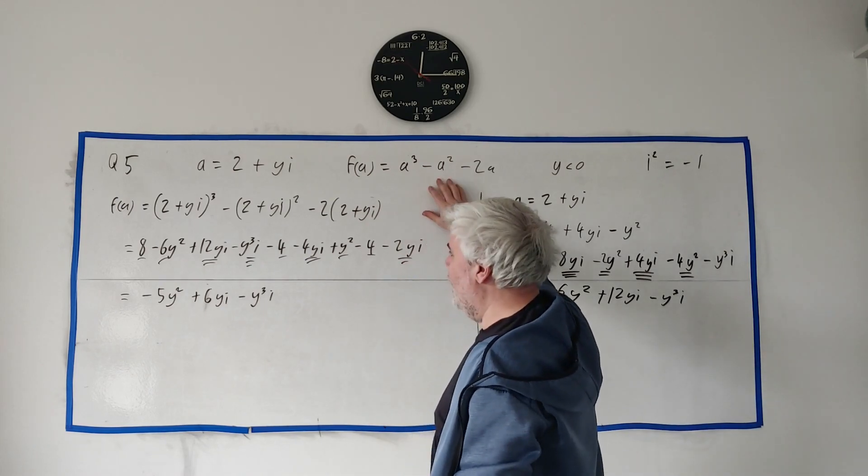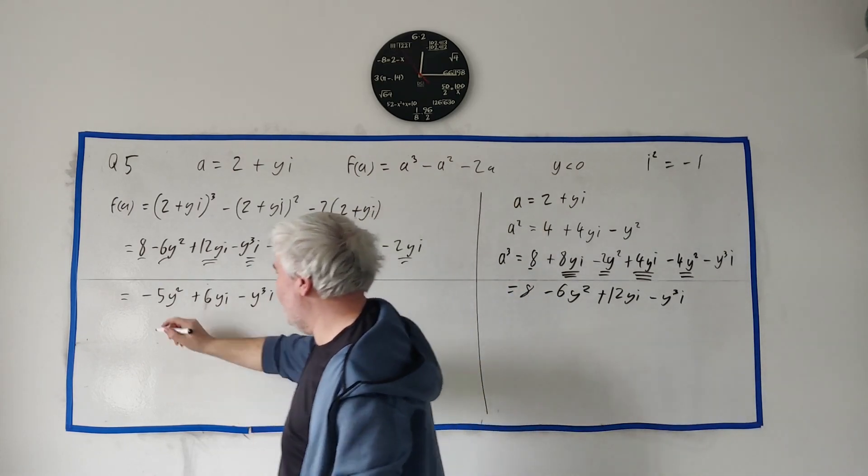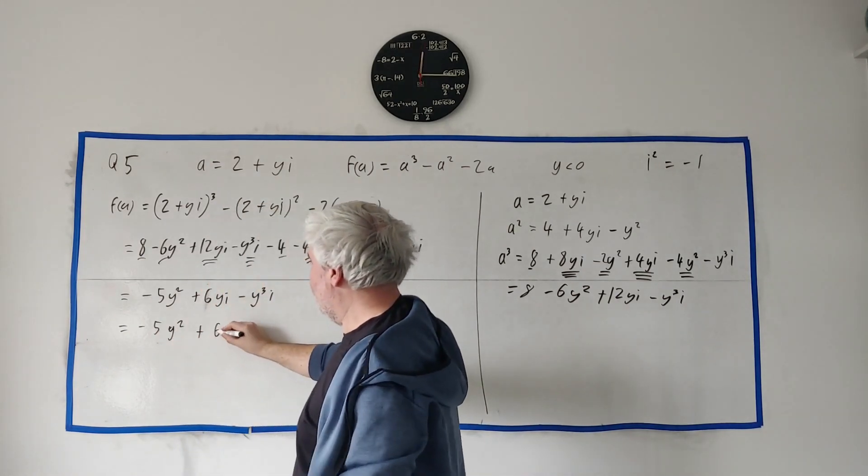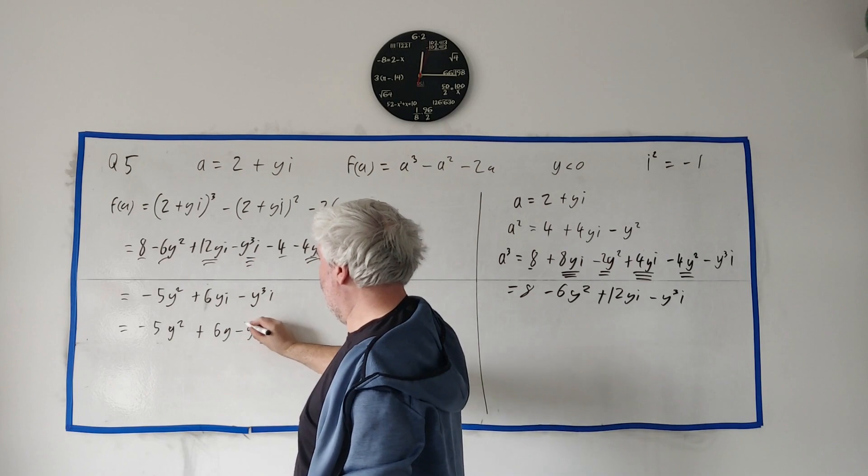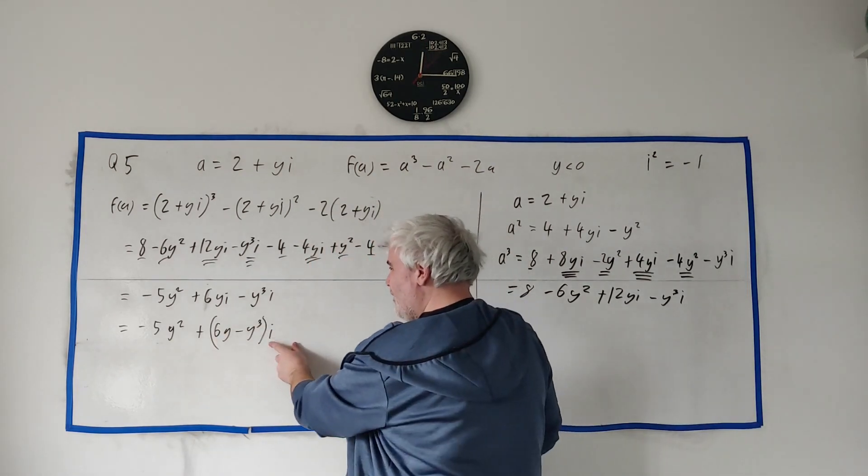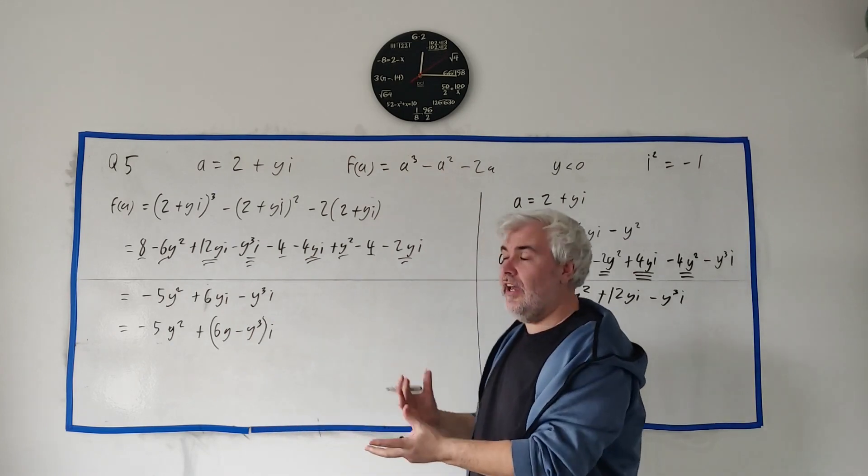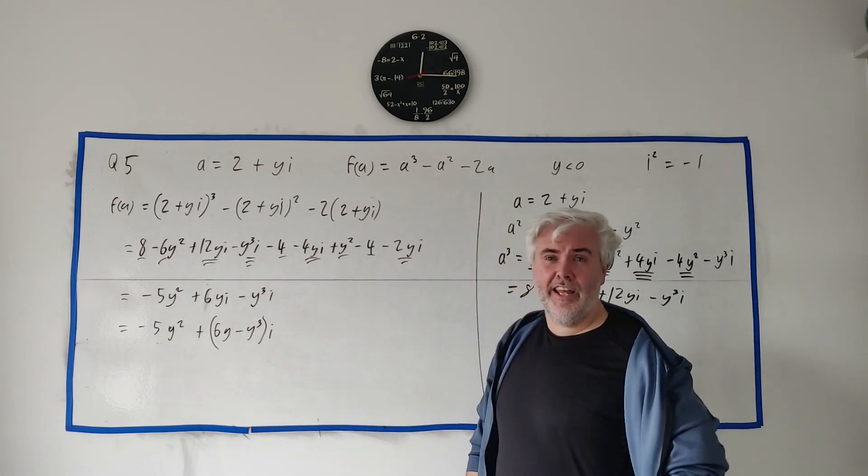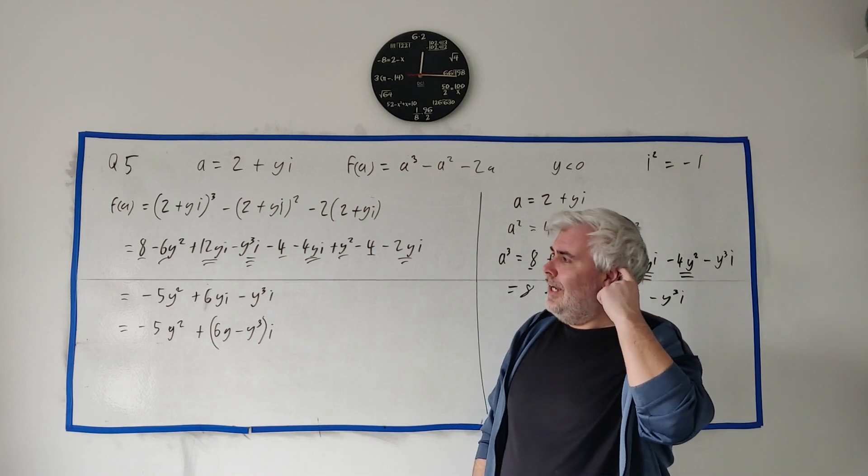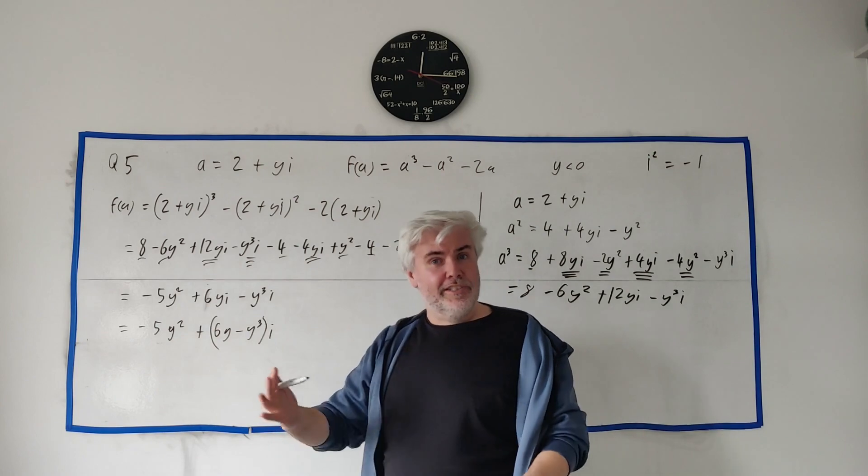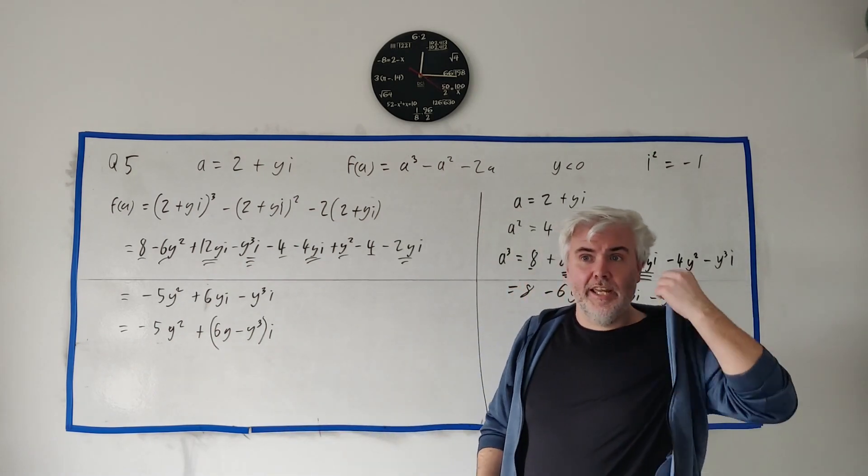Okay. So that is part A. Simplified down. Sometimes I do, I do really like to do this at the very end. Minus 5y squared plus, taking the i out, minus 5y squared plus 6y minus y cubed in a bracket with the i outside. I like to just leave, if I can take y out of two of them, I like to do it because it's just, it's a lot easier to deal with the imaginary part and the real part because they come up a lot as we're going to see in part B.